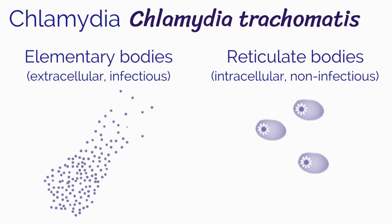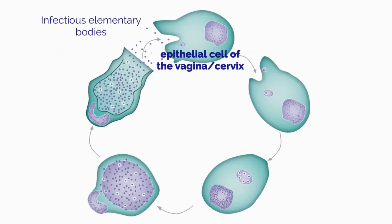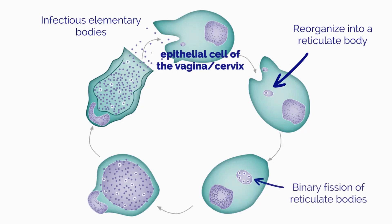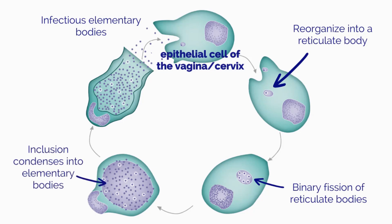How does infection occur? Elementary bodies attach and invade vaginal epithelial cells through cell surface receptors. Elementary bodies reorganize into a reticulate body inside a phagosome. The reticulate bodies replicate via binary fission and form an inclusion. The inclusion condenses into elementary bodies. Cell lysis then releases elementary bodies that go on to infect other cells.